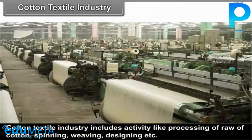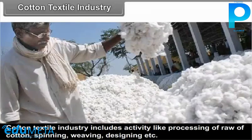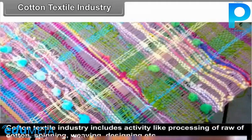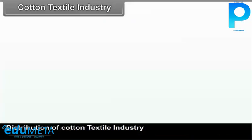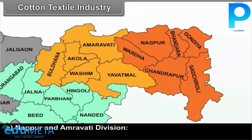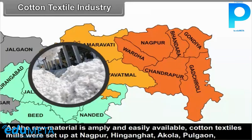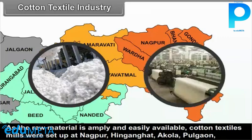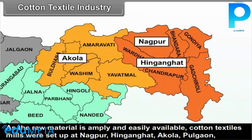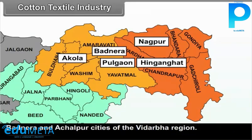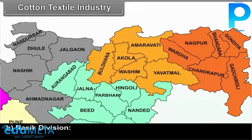Cotton textile industry includes activities like processing of raw cotton, spinning, weaving, designing, etc. Distribution of cotton textile industry: In Nagpur and Amravati Division, as the raw material is amply and easily available, cotton textile mills were set up at Nagpur, Hinganghat, Akola, Pulgao, Badnera and Achalpur cities of the Vidarbha region.